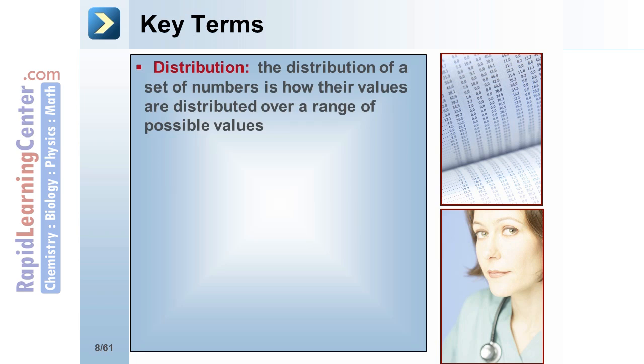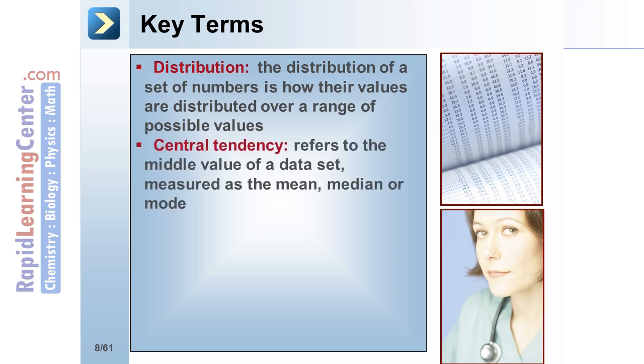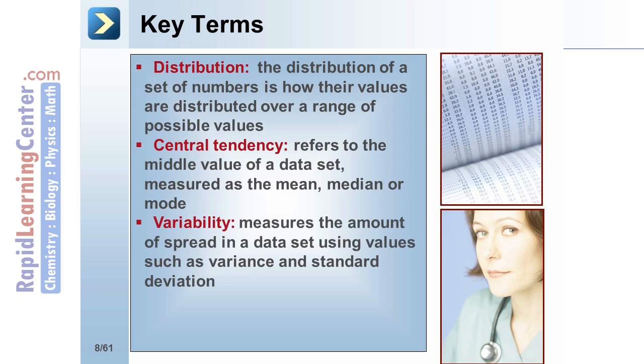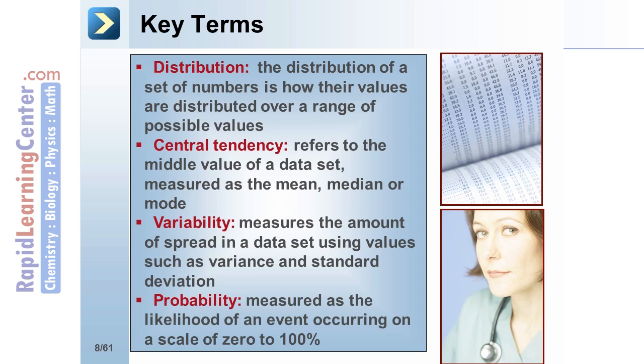Now let's review a few key terms you may encounter on the USMLE exam. Distribution: the distribution of a set of numbers is how their values are distributed over a range of possible values. Central tendency refers to the middle value of a data set measured as the mean, median, or mode. Variability measures the amount of spread in a data set using values such as variance and standard deviation. And probability: probability is measured as the likelihood of an event occurring on a scale of 0 to 100%.